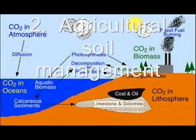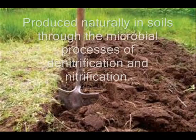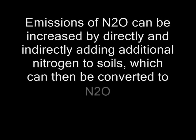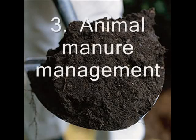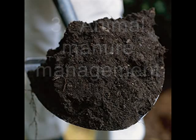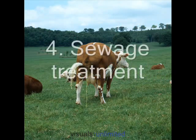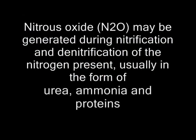Agricultural soil management: nitrogen oxides are produced naturally in soil through microbial processes, and emissions of nitrous oxide can be increased by adding additional nitrogen to soil. Animal manure management: nitrous oxide is produced from organic nitrogen in livestock solid waste. Sewage treatment: nitrous oxide is generated from the nitrogen present in urea, ammonia, and proteins.